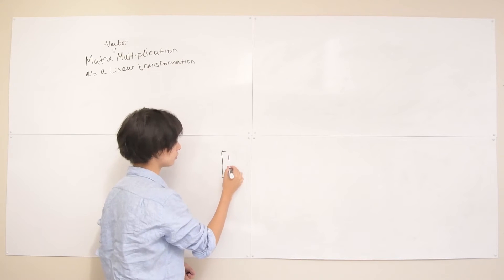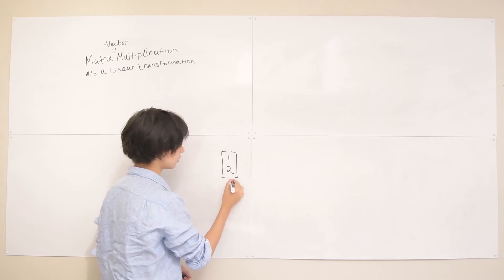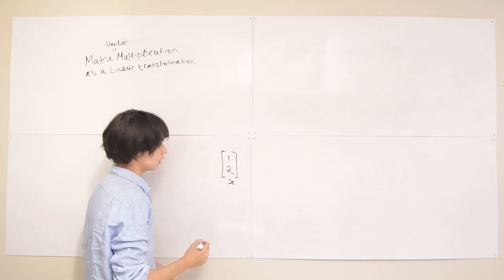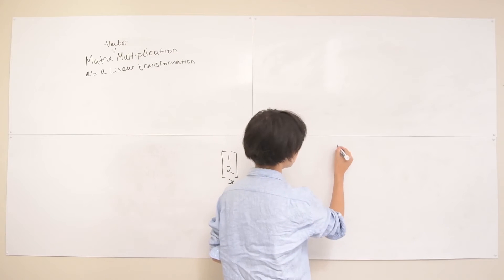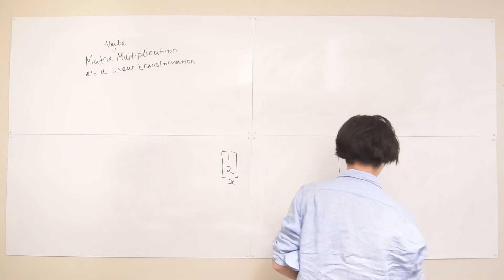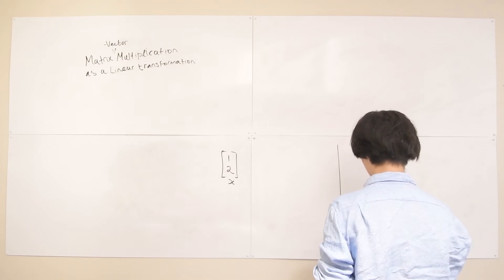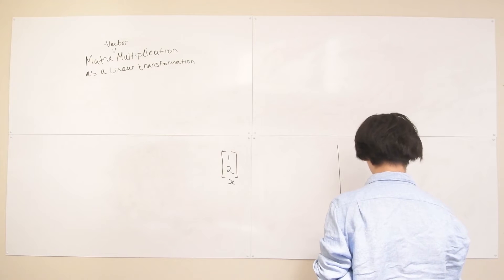So let's say we have some vector [1, 2] and let's call this X. Okay, so let's plot this on a Cartesian plane. Let's make 1, 2, 3, 4 and 1, 2, 3, 4. That's our Cartesian plane there.